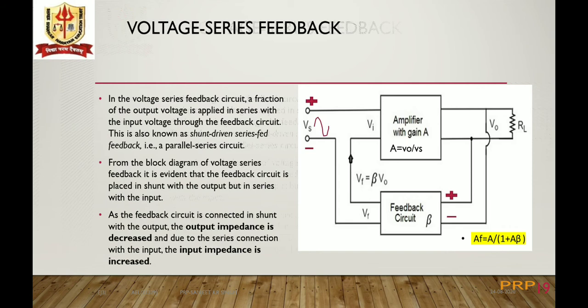Voltage series feedback: from the block diagram we see that a fraction of the output voltage is taken in parallel from the output and fed to the input side through the feedback circuit, so the feedback signal Vf is in series with the input Vs. In order to have negative feedback, the amplifier will have a 180 degree phase shift and the feedback circuit will offer 0 degree phase shift.